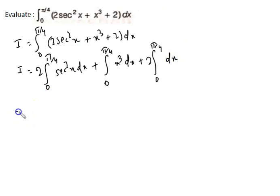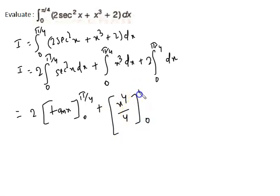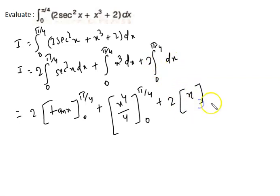We know that the integration of sec²x equals tan x, so we write [tan x] from 0 to π/4. The integration of x³ becomes x⁴/4, with limits 0 to π/4. And 2 times the integration of 1 dx equals 2 times [x] from 0 to π/4.